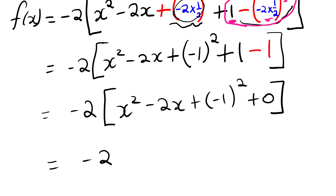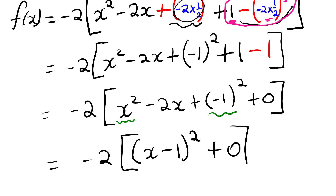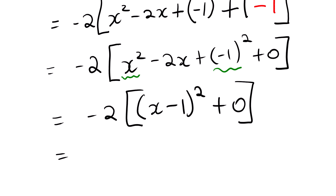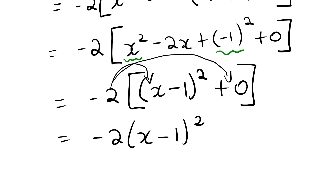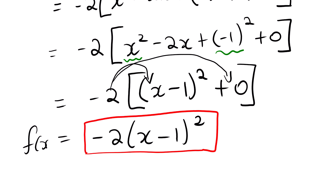Inside the square bracket, we look at the terms raised to the power 2 and group them. We have x minus 1 raised to the power 2, plus 0. Then we remove the outer bracket by multiplying through by negative 2. This gives negative 2 times (x minus 1) squared. Negative 2 multiplied by 0 is simply 0. We are done transforming our equation — this is f(x). This is the procedure for rewriting the equation in bracket form.